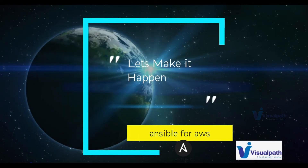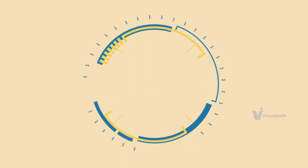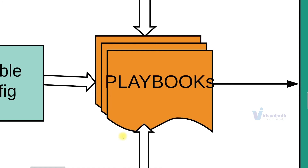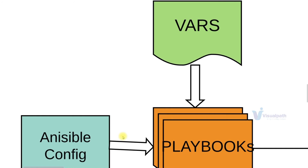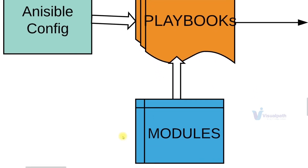Before we get into the code — and there will be a lot of code — let's look at the architectural design of what exactly we're going to do. Starting in the architecture, we have the playbooks. These playbooks will use variables defined in a vars file along with some Ansible configuration. The playbook will be powered by a number of modules to set up the VPC.